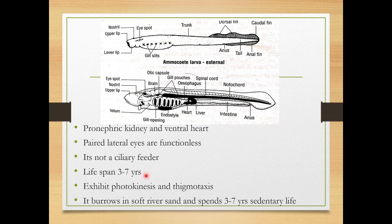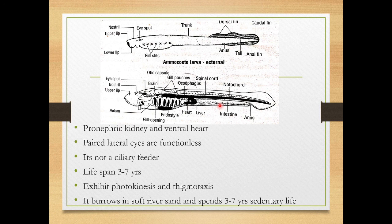When the adult is about to lay its eggs, it moves to the bank of the sea or to freshwater rivers where it lays the eggs. After hatching, the larva burrows in the sand and leads a sedentary life for three to seven years. Earlier, scientists thought that the larva and the adult were different organisms not related to each other.